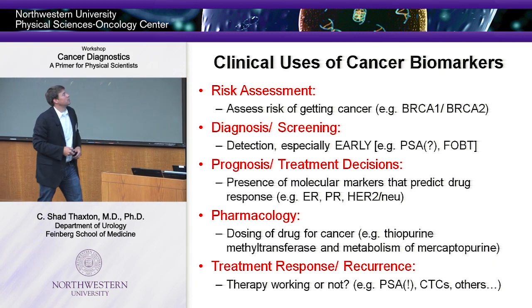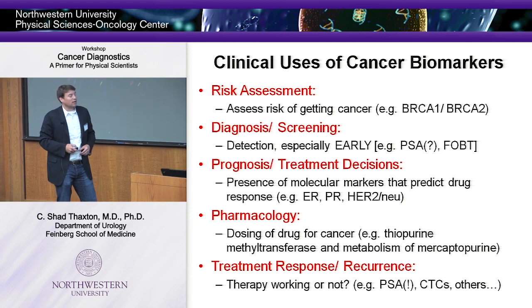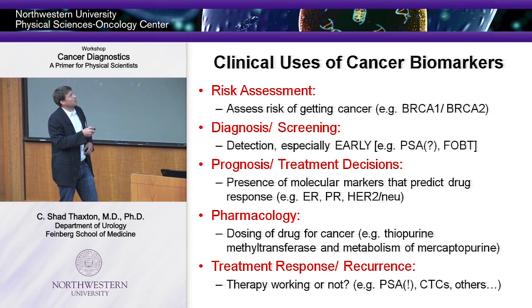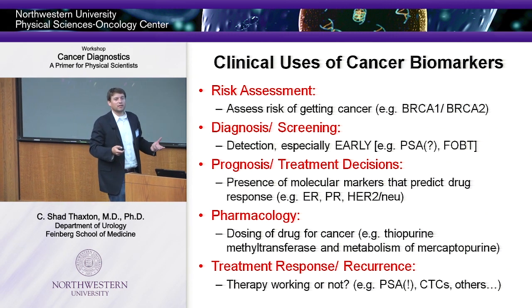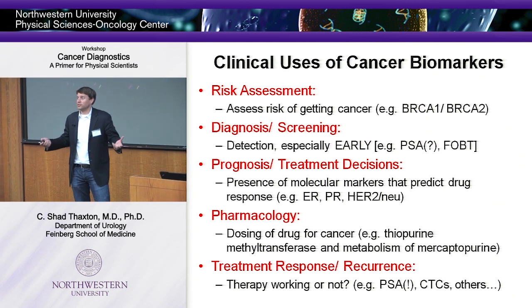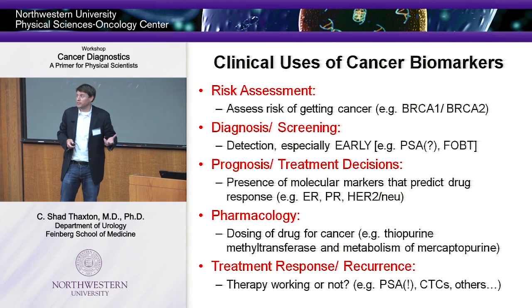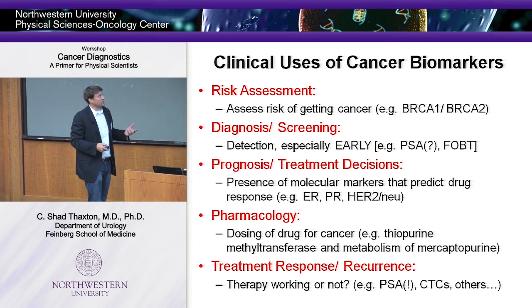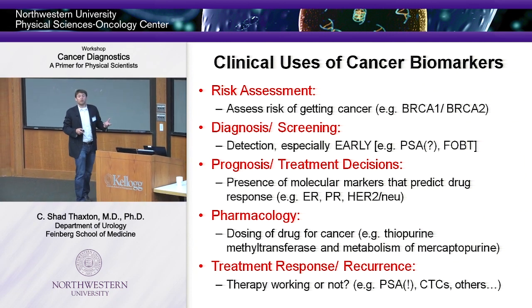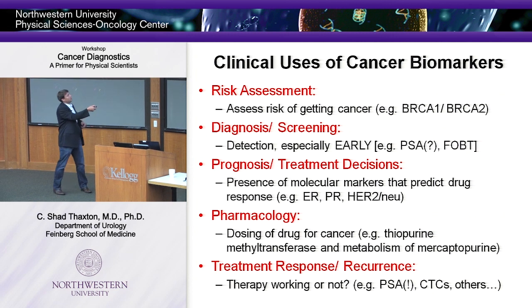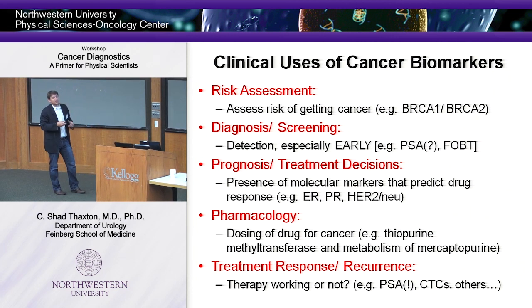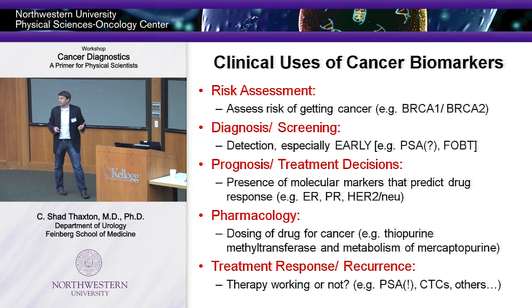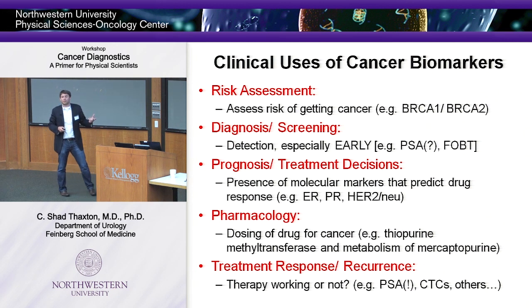What do we use biomarkers to do? There are multiple uses: risk assessment — for example, BRCA1 and BRCA2 mutations, as in the case of Angelina Jolie, who carried a mutation in one of these proteins predisposing her to breast and ovarian cancer and elected to have a mastectomy based on her risk profile. Biomarkers are also used for diagnosis and screening — detecting cancer early so you can treat early. Prostate-specific antigen is a highly controversial example, and fecal occult blood testing is a screening test for detecting early malignant neoplasms in the colon.